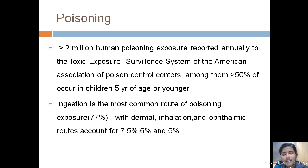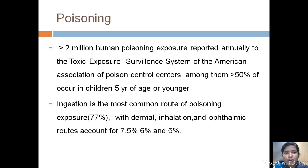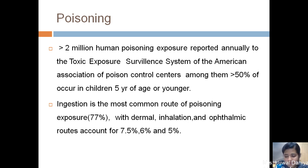Poisoning occurs in around more than 2 million human poisoning exposures annually; among them more than 50 percentage occur in children younger than 5 years of age. Ingestion is the most common route of poisoning exposure at around 77 percentage. Dermal exposure accounts for 7.5 percentage, inhalation 6 percentage, and ophthalmic exposure 5 percentage.